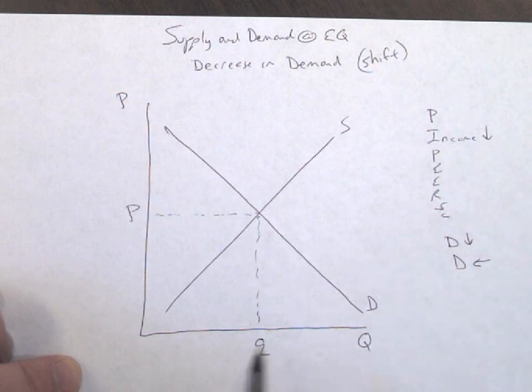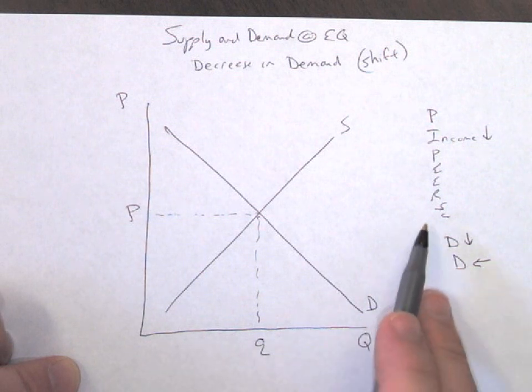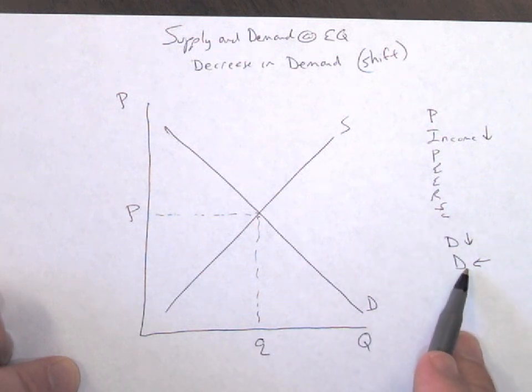That means it's going to shift to the left. Remember this is zero and this is more. So we increase right or decrease left. So in this case, I know demand is going to go down or shift to the left.